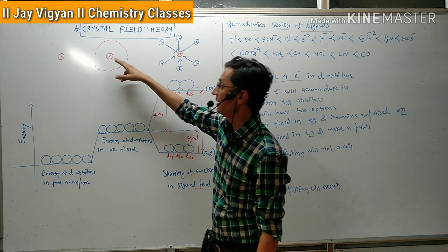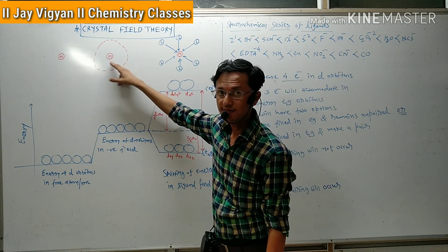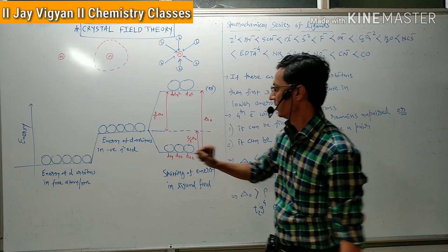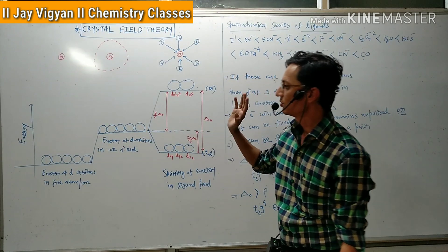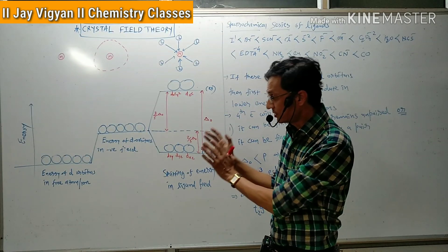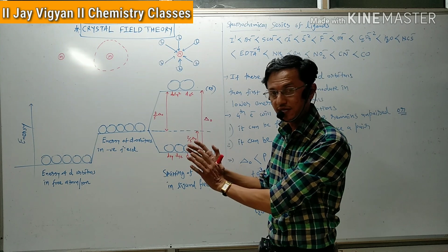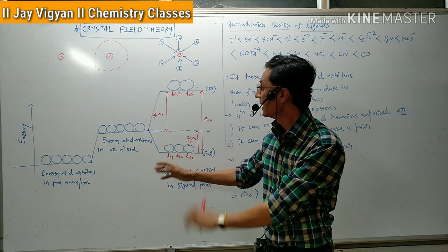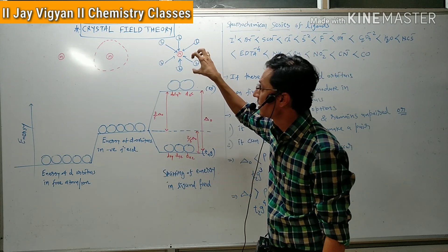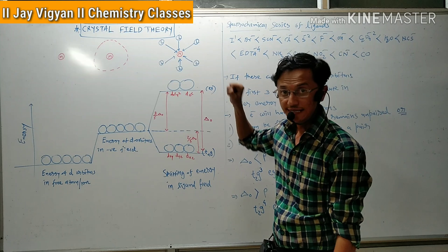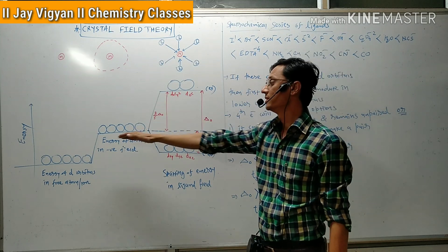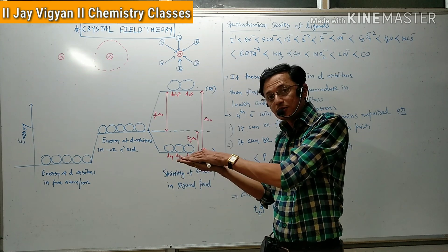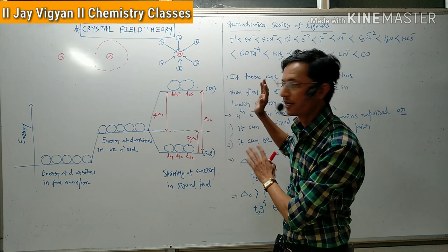If any metal atom or ion is surrounded by a negatively charged cloud, in that case also the energy of all 5 d-orbitals remains the same — they are still called degenerate orbitals. But when any ligand comes to attach with the metal or metal ion, in that case the energy of these 5 d-orbitals will not remain the same. There will be some splitting of energy, as you can see in this diagram.